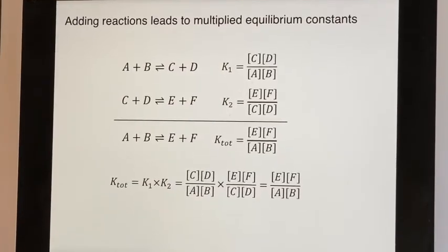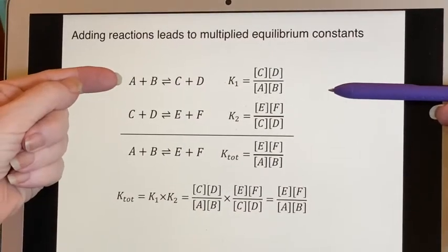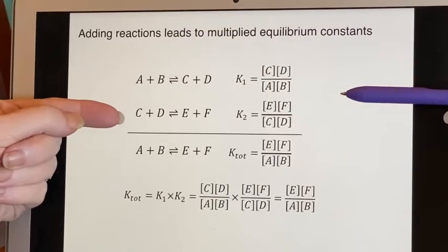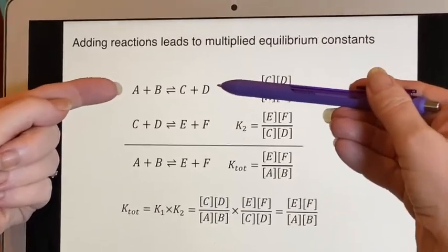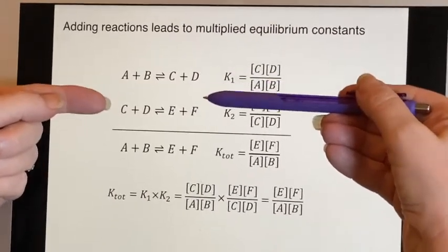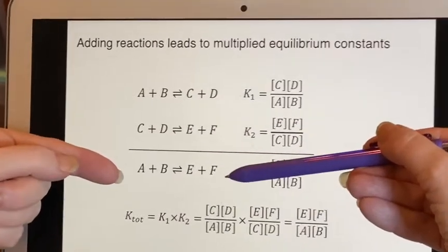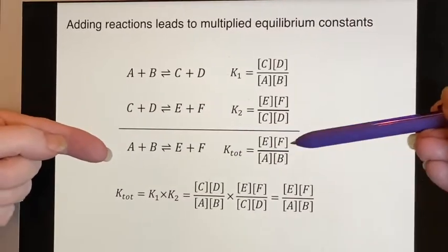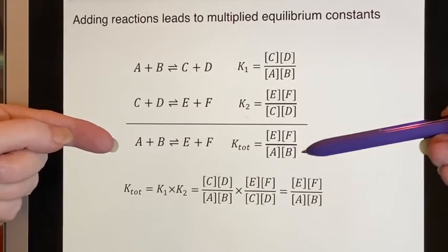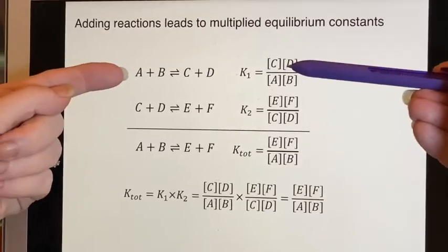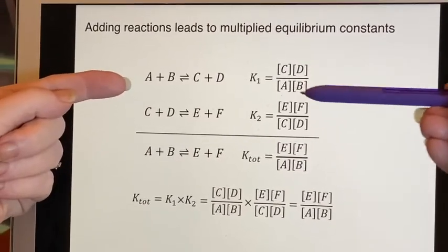We can look at adding reactions. Here is a reaction, and then here is a continuing reaction. So this would be like the first step of a mechanism and the second step of a mechanism being an overall equation. The overall equation, we expect to have the products over the reactants.